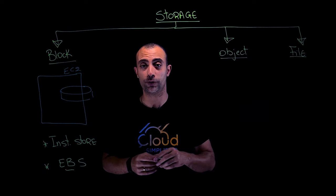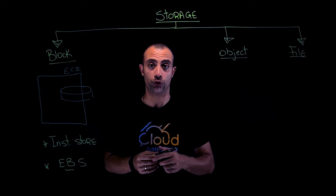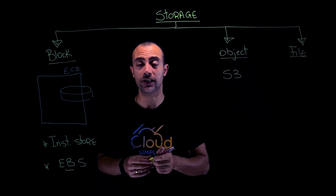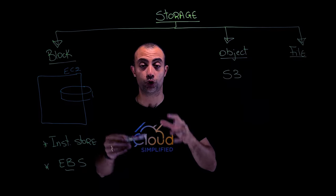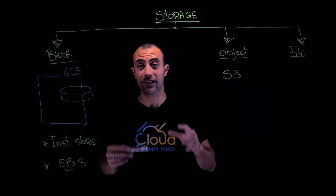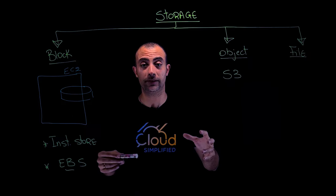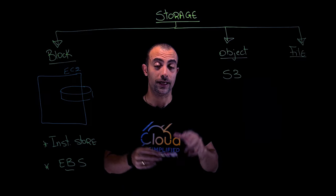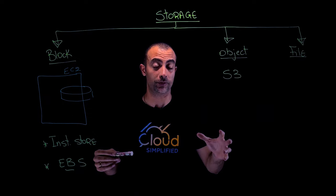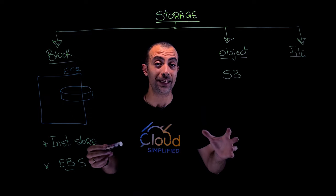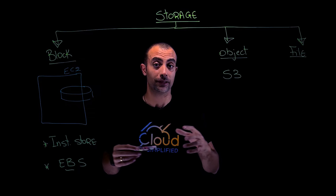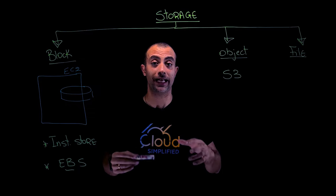The second type of storage is called object storage, and the name of the service here is S3, which stands for Simple Storage Service. S3 is an object storage that offers industry-leading scalability, data availability, and security. S3 can store and protect almost any type of data, suitable for many use cases like websites, data lakes, backups, cloud-native applications, and analytics.